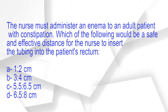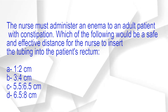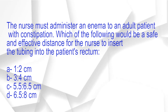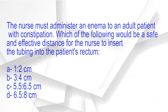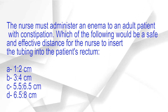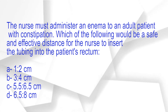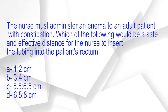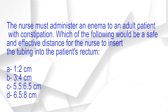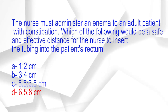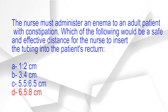The nurse must administer an enema to an adult patient with constipation. Which of the following would be a safe and effective distance for the nurse to insert the tubing into the patient's rectum? A. 1-2 cm. B. 3-4 cm. C. 5.5-6.5 cm. D. 6.5-8 cm. The correct answer is option D: 6.5-8 cm.